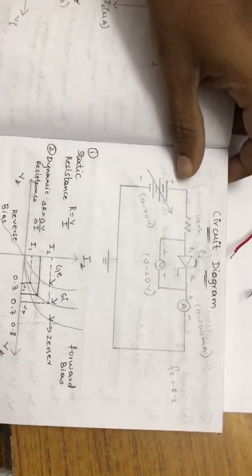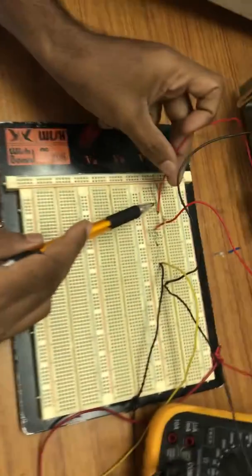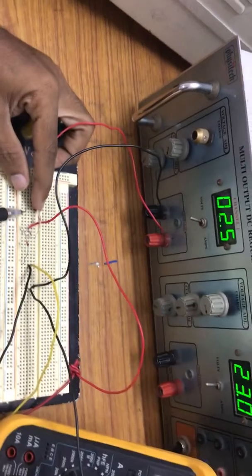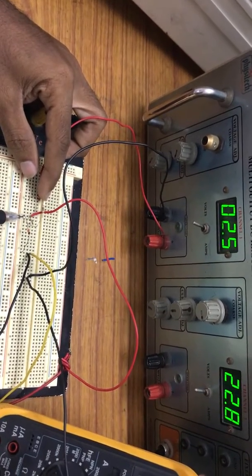In this experiment, this is your circuit diagram. The positive of your DC supply is connected to one end of the resistor, and the other end of the terminal is connected to the anode.